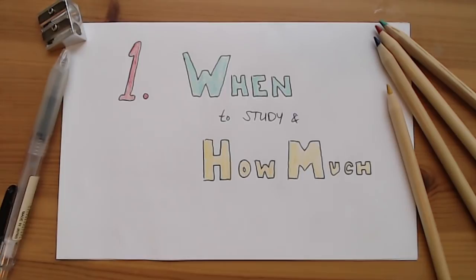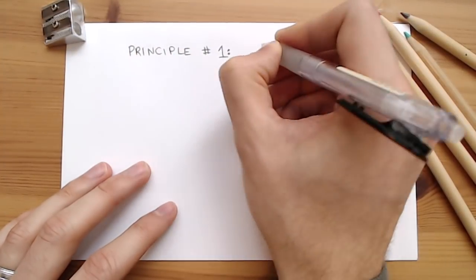But what's less clear is how you should allocate your limited studying time. And this brings us to our first cognitive science principle, spacing.